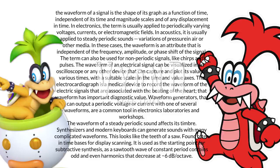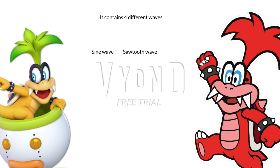Synthesizers and modern keyboards can generate sounds with many complicated waveforms. There are four different types of waves: sine wave, sawtooth wave, triangle wave, and square wave. A sawtooth wave looks like the teeth of a saw, and is often found in time bases for display scanning. It is used as the starting point for subtractive synthesis, as a sawtooth wave of constant period contains odd and even harmonics that decrease at minus 6 decibels per octave.